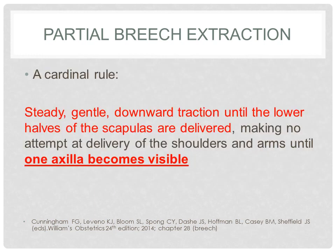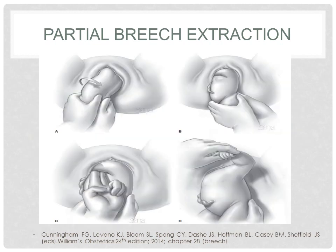The cardinal rule in successful breech extraction is to employ steady, gentle downward traction until the lower halves of the scapulas are delivered, making no attempt at delivery of the shoulders and arms until one axilla becomes visible. As the scapulas become visible, the fetal back tends to turn spontaneously towards the side of the mother to which it was originally directed. The appearance of one axilla indicates that the time has arrived for shoulder delivery. It doesn't make any difference which shoulder is delivered first. When the scapulas become visible, the trunk is rotated so that the anterior shoulder and arm appear at the vulva and can easily be released and delivered first. The body of the fetus is then rotated 180 degrees in the reverse direction to deliver the other shoulder and arm.